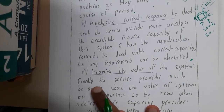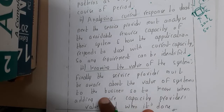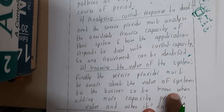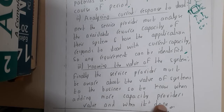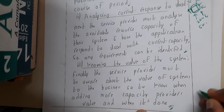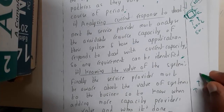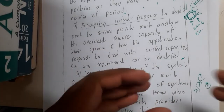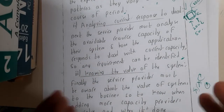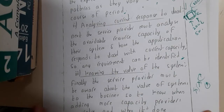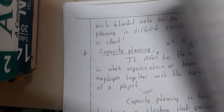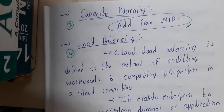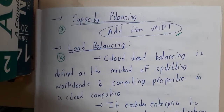The final step is knowing the value of the system. The service provider must be aware of the value of the system to the business — knowing when they are adding more capacity and when it is done. Whenever any modification is done, the billing amount or financial requirement will also increase, so admins will keep an eye on this. In the next lecture we will continue with load balancing and discuss multiple ways in which load balancing is done.